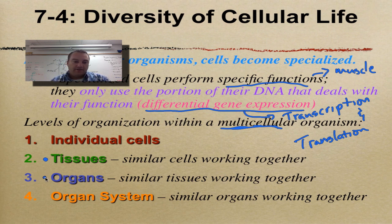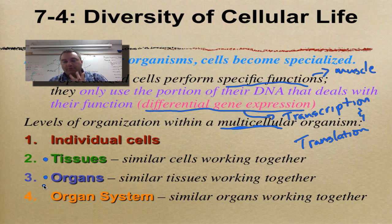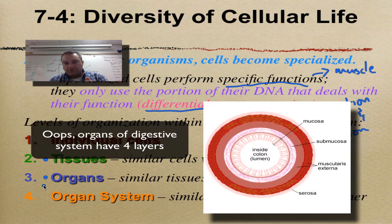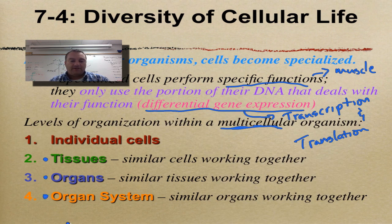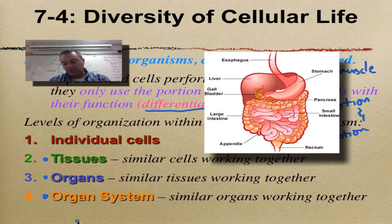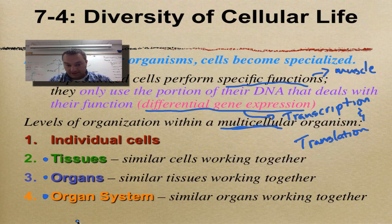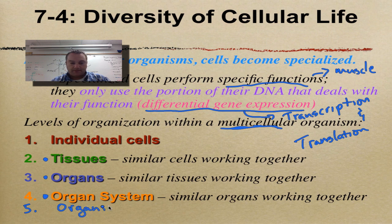You take a bunch of tissues and put them together and you're going to have an organ. Think of an organ as made up of different tissue layers — for example, your stomach and intestines have three separate tissue layers, and those three layers together make that organ. Put a bunch of organs together and you're going to have an organ system. Think of your digestive system: your esophagus, stomach, small intestine, and large intestine all make up your digestive system. We could add a fifth level — an organism — which is a bunch of organ systems working together.